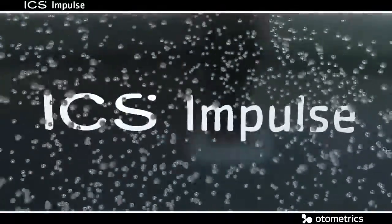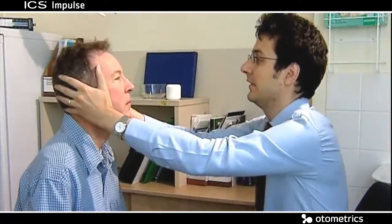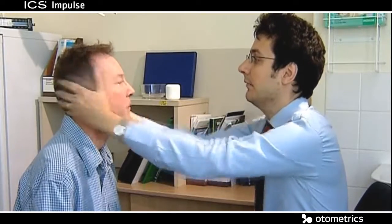Head impulse testing was always done subjectively, which means we performed the tests sitting in front of the patient, looking into the patient's eyes and subjectively evaluating if they had a deficit or not.